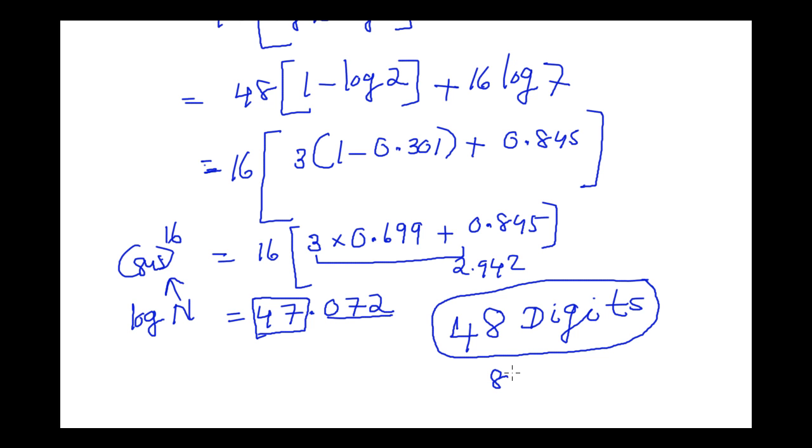There will be 48 digits in 875 power 16. Thank you.